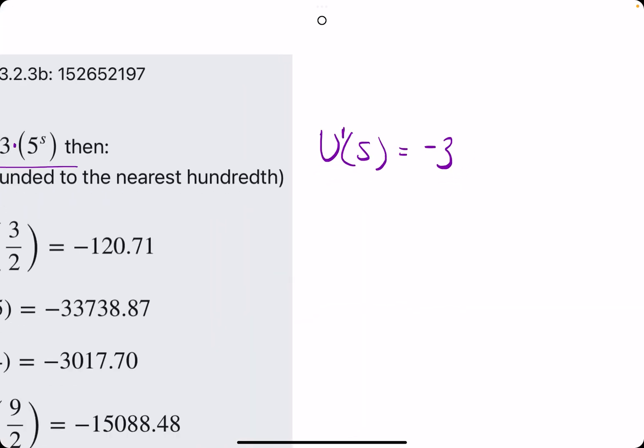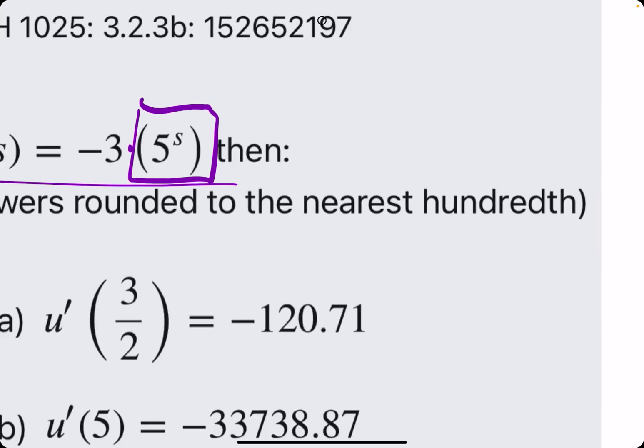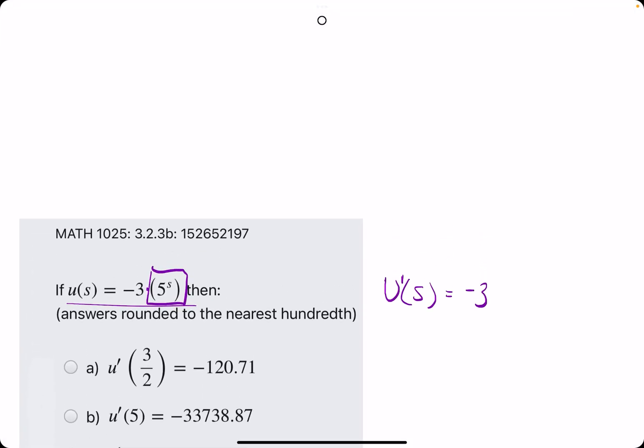So if we're finding u prime of s, we will basically just keep the negative 3 and find the derivative of 5 to the s. 5 to the s has, or is a function of the form,